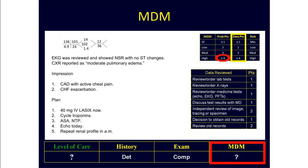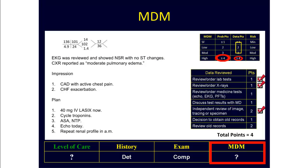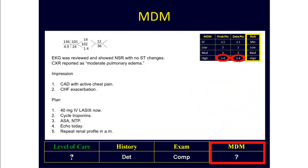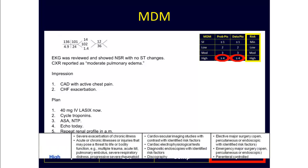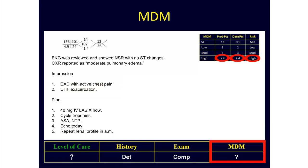Looking at the data points, here we get one data point for reviewing labs, two data points for eyeballing the EKG, and one data point for looking at the chest X-ray report. That gives us a total of four data points. Looking at the risk, in this patient, both the CAD and CHF would probably count as acute or chronic illnesses which may pose a threat to life or bodily function. Therefore, I think this is a high-risk encounter. Only two out of three dimensions are needed, but in this case, all three dimensions point us toward high-complexity medical decision-making. So now the final key component is known.